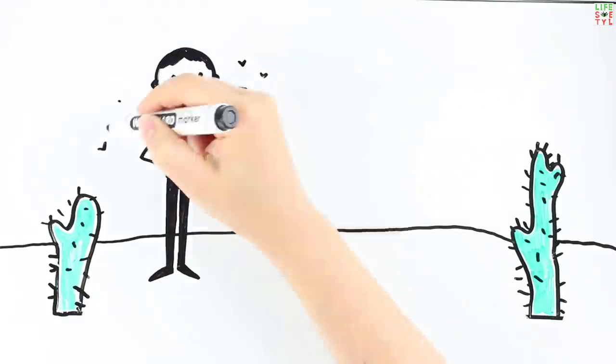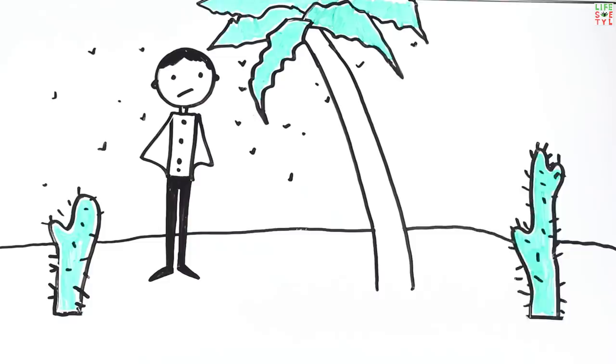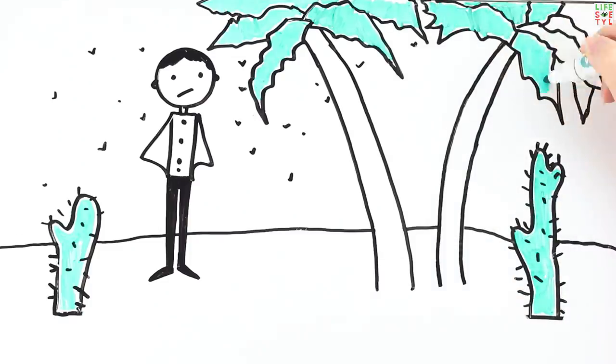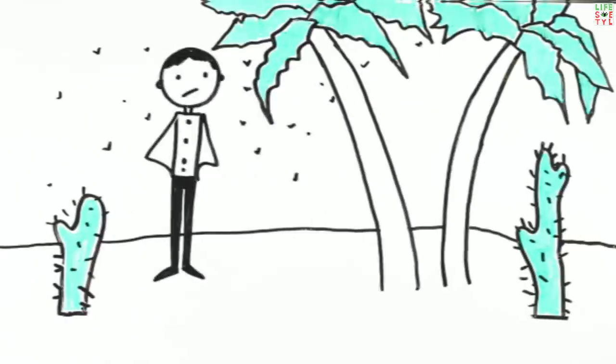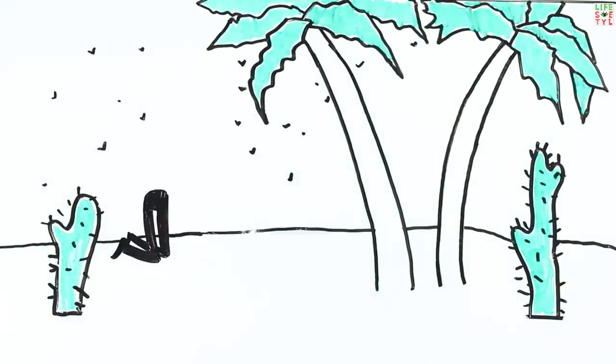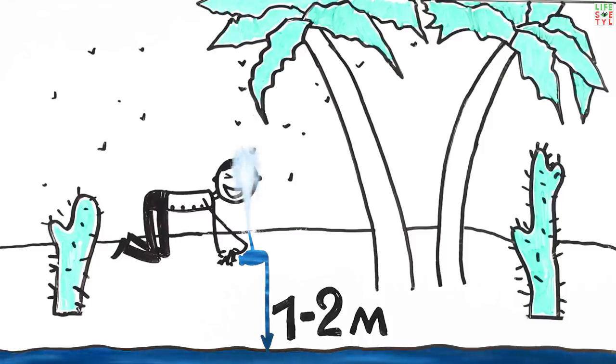The proximity of water will be indicated by accumulations of mosquitoes and midges after sunset, as well as bright green vegetation, wild watermelons, or date palms among the sand. Try to dig a well in this place. Dig until dark wet sand is visible, around a depth of three feet to six and a half feet. Then stop and wait. The groundwater will gradually fill the excavated hole.